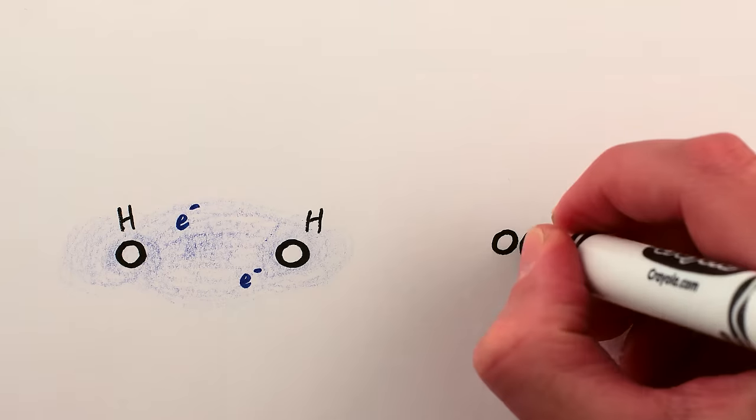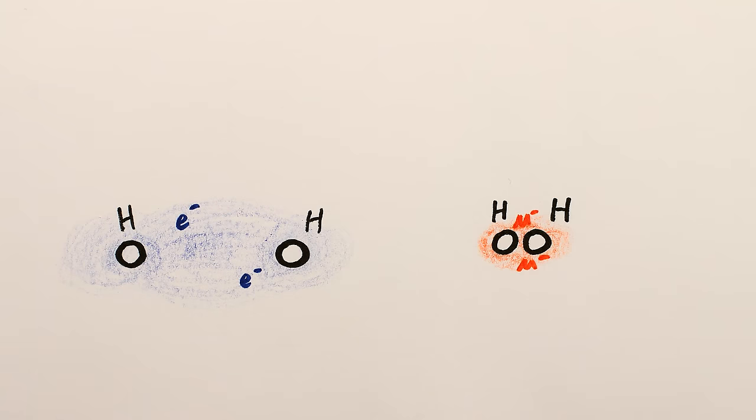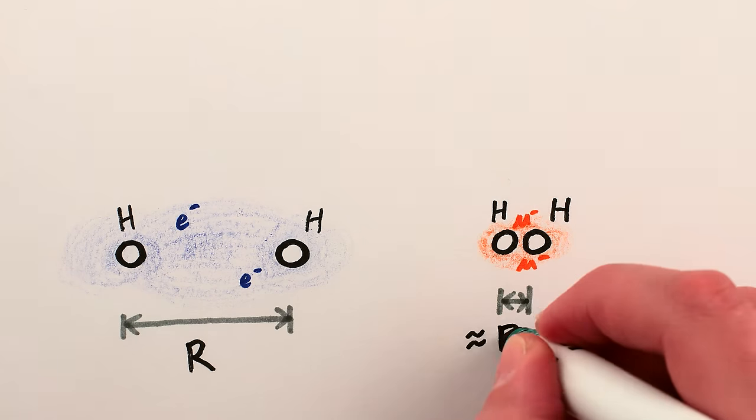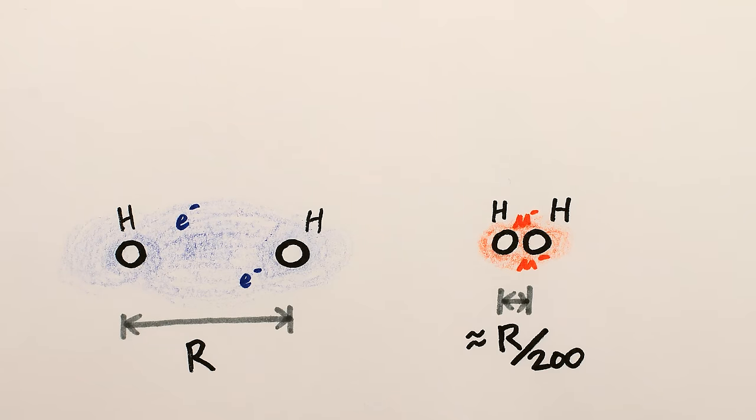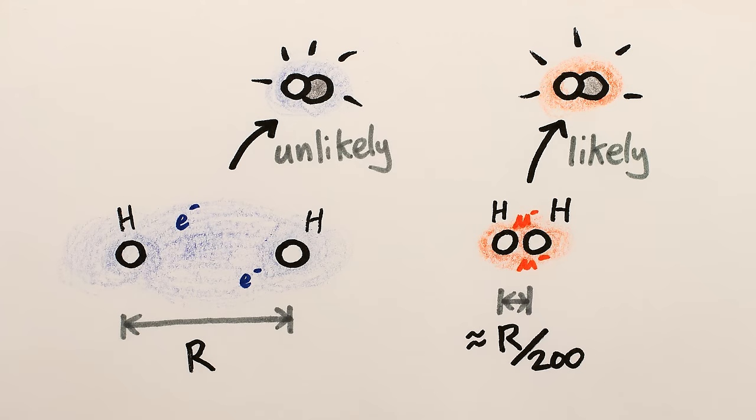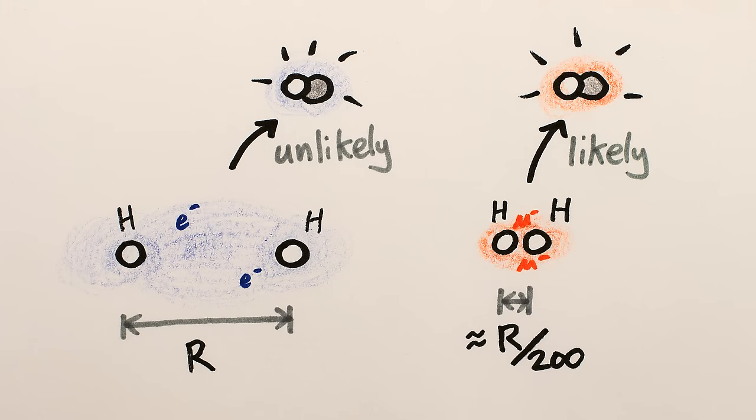And this means that atoms and molecules held together with muons instead of electrons are about 200 times smaller, and their nuclei are correspondingly about 200 times closer together. And being closer together makes nuclei many, many, many, many times more likely to fuse together.